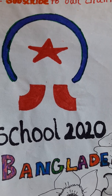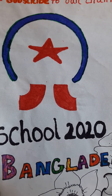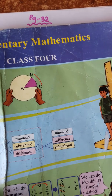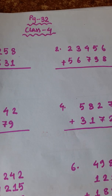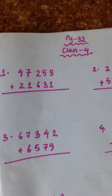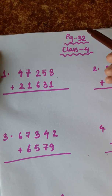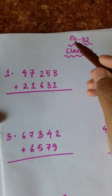Welcome to School 2020. Today we are going to Class 4 in elementary mathematics. Our first math is page number 32 in Class 4 elementary mathematics — page number 32, one-number math.